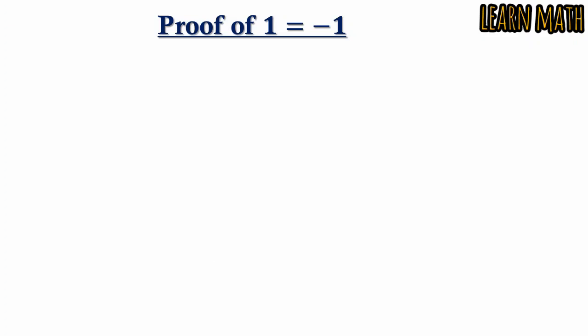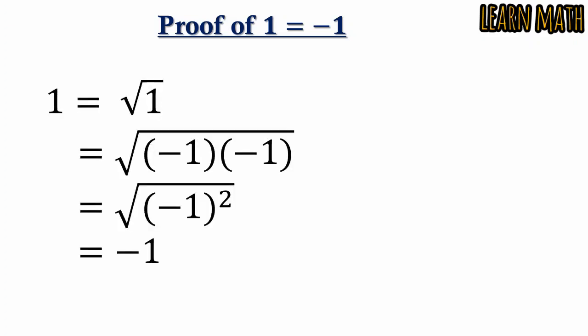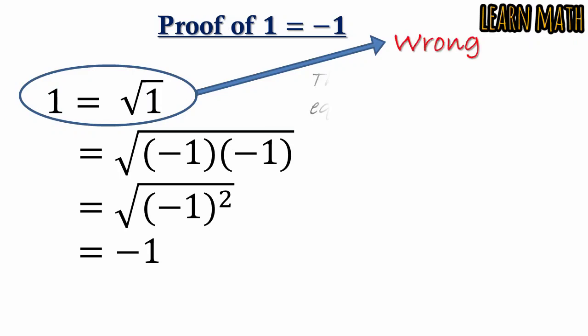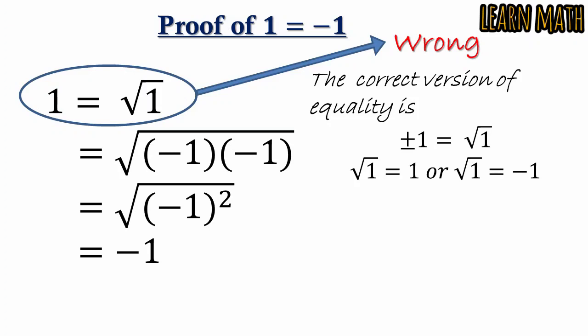Look at the proof by first method. In this proof, where is the mistake? The supposition 1 equals √1 is wrong. We cannot suppose √1 equals 1 like this. Why? The correct version of this equality is ±1 equals √1. So √1 is either 1 or √1 equals -1.